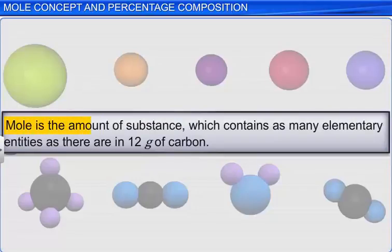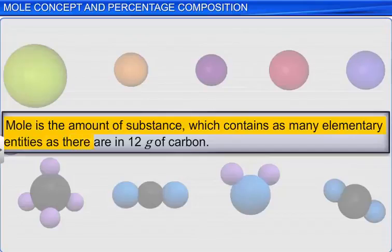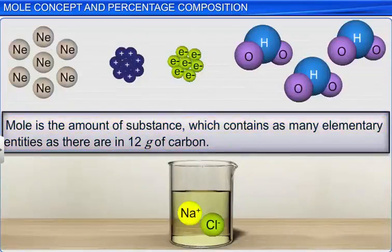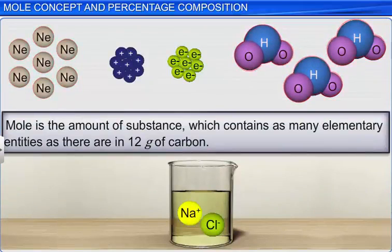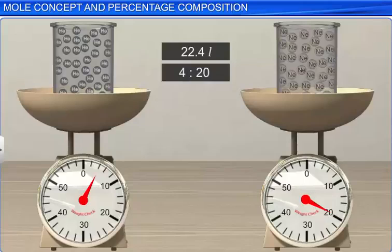Mole is the amount of substance which contains as many elementary entities as there are in 12 grams of carbon. Elementary entities may be atoms, molecules, ions, electrons, or protons. Note that one mole of a substance always contains the same number of entities, irrespective of the identity and kind of the substance.